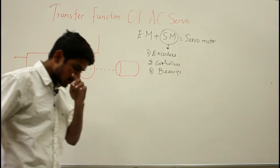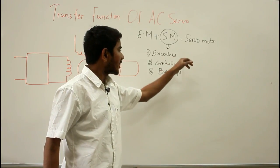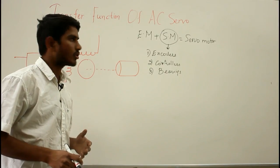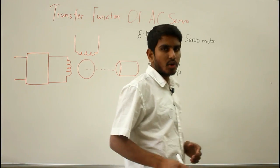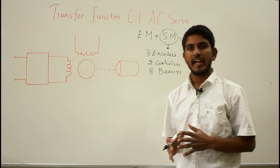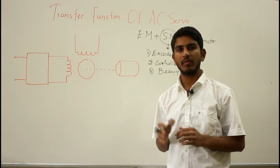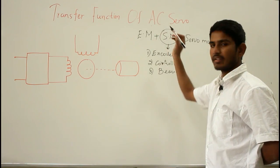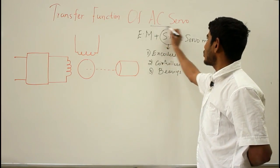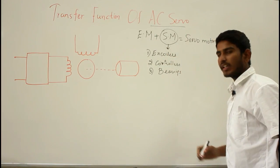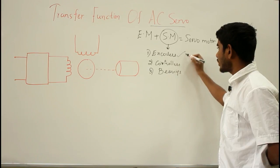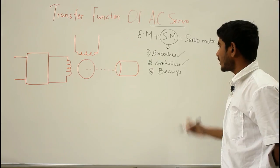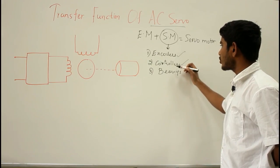AC servo motors are AC motors that incorporate encoders and are used with controllers for providing the feedback circuit and closed loop control. These servo motors are positioned to high accuracy, meaning you can exactly control the position of the shaft required for the application. The difference between a normal AC motor and an AC servo motor is that the servo motor has special purpose components — encoders and controllers.